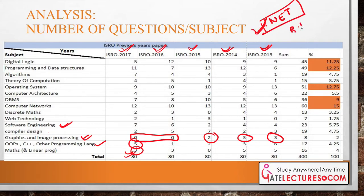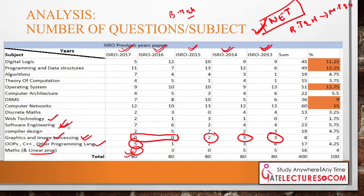If you have done B.Tech and M.Tech and are preparing for UGC NET, this is a good opportunity because subjects like web technology, software engineering, computer graphics, image processing, C/C++, and linear programming are covered in ISRO but not in GATE. Students who have only done B.Tech and are not comfortable with these subjects may lag behind, whereas those with a PhD or UGC NET preparation will have an advantage.